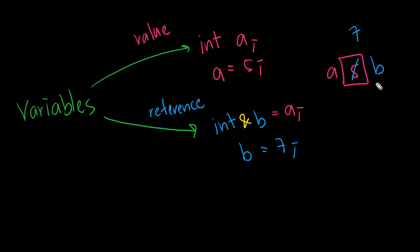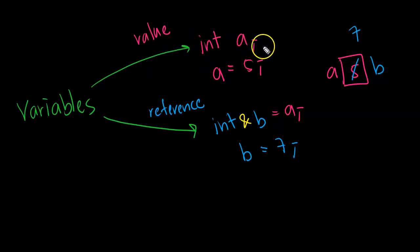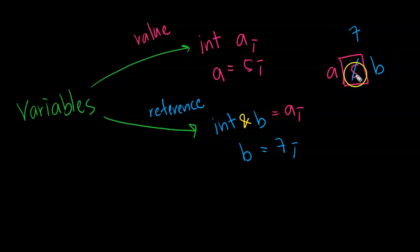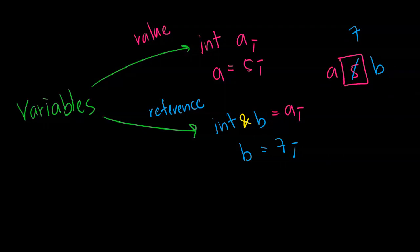In summary, when we declare a variable as value semantic, we create a new object for that variable. As opposed to reference semantic — we do not create a new object. Instead, we are giving another name, an alias, to an existing object. So now this object is known as a and can also be known as b. That's it about value semantic and reference semantic.